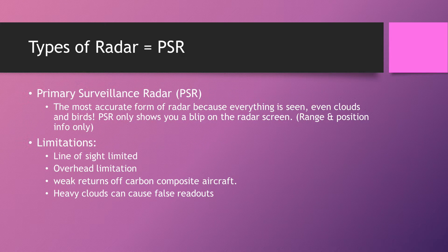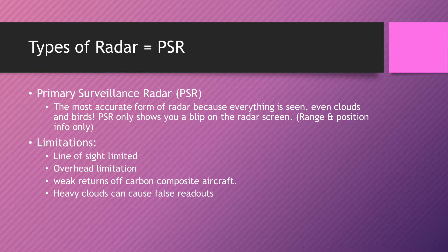Let's move on to types of radar. We have primary surveillance radar. Although it's the oldest, primary surveillance radar is actually still the most accurate form of radar we have. The way it works is you have a large spinning radar dish at the airport — it sends out a beam and whatever's in the sky reflects that beam back to the radar. Whatever's reflected back shows as blips on the screen, so it sees absolutely everything. Crucially, you don't need a transponder to be seen by primary surveillance radar.